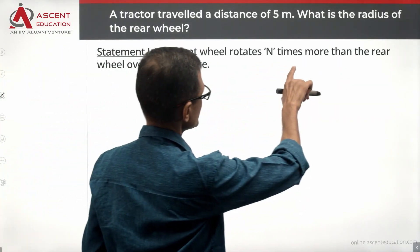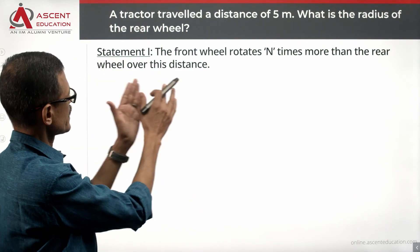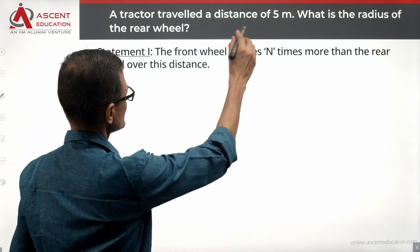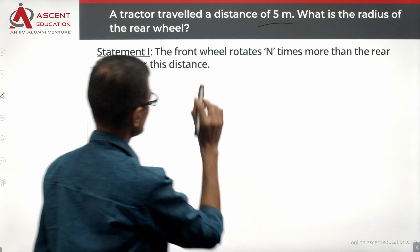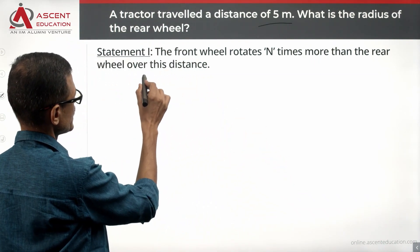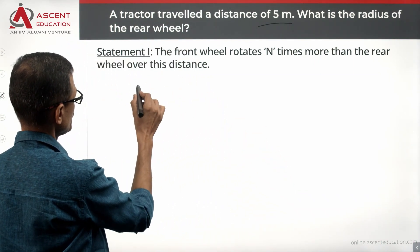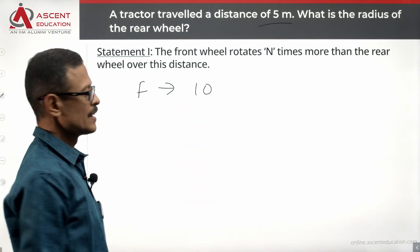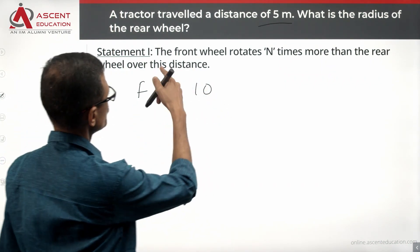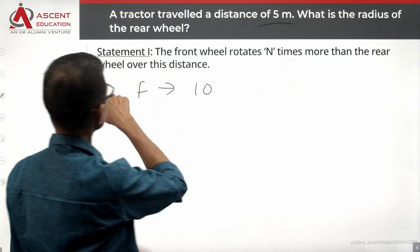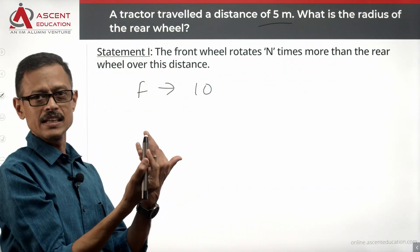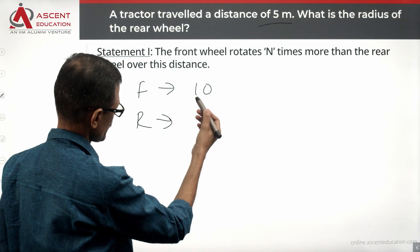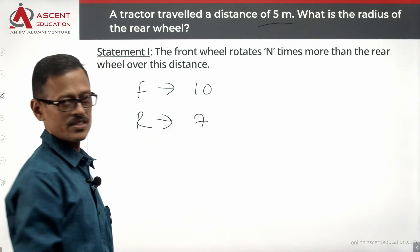Statement 1: the front wheel rotates n times more than the rear wheel over a distance of 5 meters. The front wheel is rotating — the front wheel number of rotations is 10. The front wheel rotates n times more than the rear wheel. The rear wheel is going to make 7 rotations over this distance.